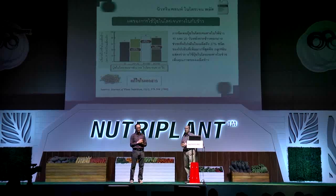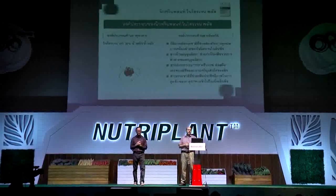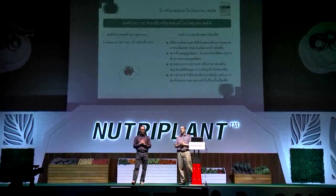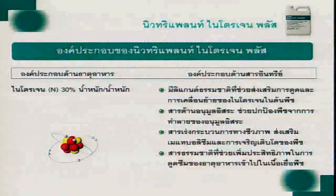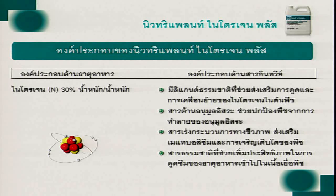Let's talk about the composition of Nitrogen Plus. It contains 30% nitrogen as a mineral component, and also an organic component. When you see the plus on those products, you know there is something more than just the nutrients. We'd like to explain what other things are included in the organic matter that makes this product very unique.